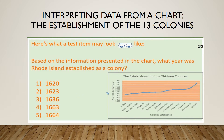So in order to answer this question, the first thing that we want to do is to familiarize ourselves with the chart. We have here the establishment of the 13 colonies. On the left, we see year of establishment — these are the years in which the colonies were established — and we have colonies established. In terms of answering our question, which is asking us about Rhode Island, we want to come over to the chart and identify where Rhode Island is, and we can see that Rhode Island is here on the chart.